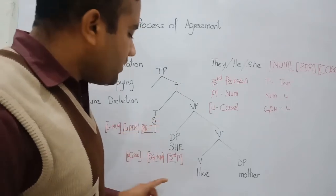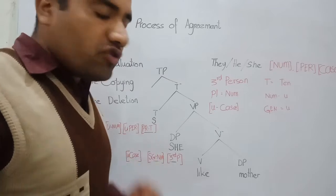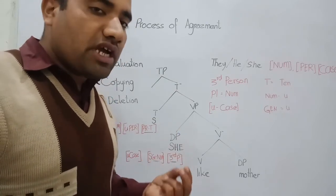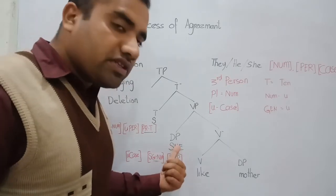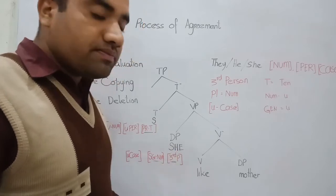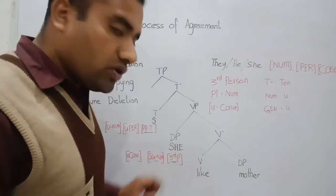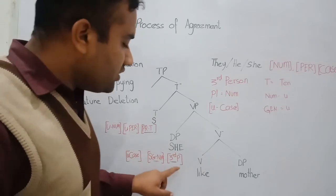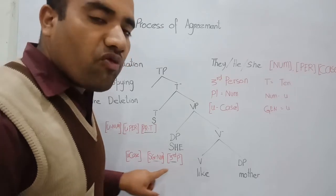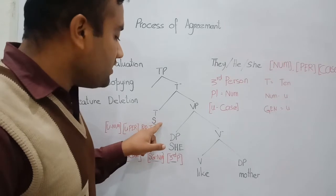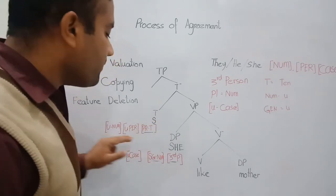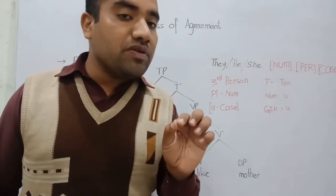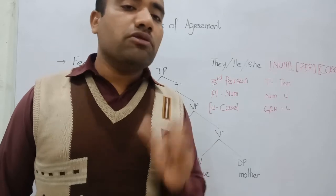In this sentence, the DP and the TP both involve the feature valuation process. The features of 'she' include two types: valued and unvalued. The valued features of 'she' are third person and singular — the person feature is third and the number feature is singular — but it has an unvalued case feature. So two features of 'she' are valued.